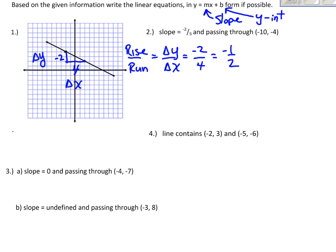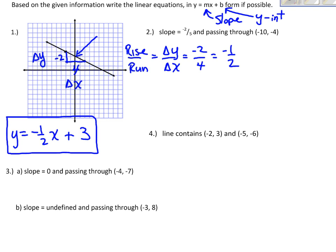So far I know y equals negative 1/2 x plus b. But b is my y-intercept, and if I look at the graph I can count it up: 1, 2, 3 units up. So my final equation is y equals negative 1/2 x plus 3.